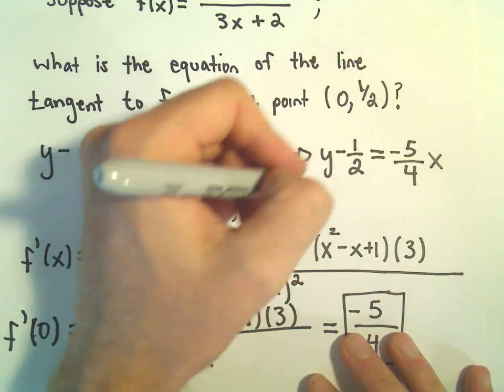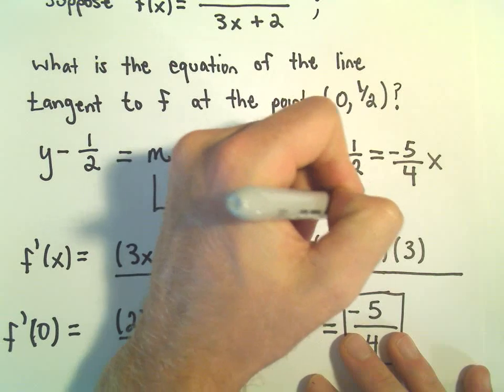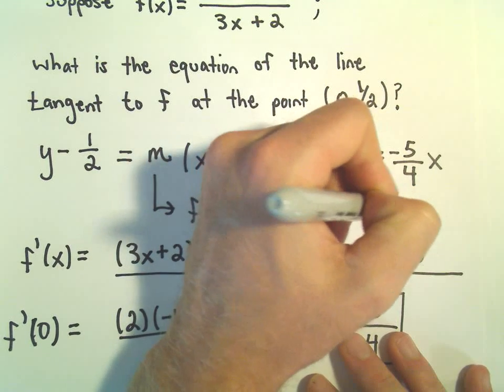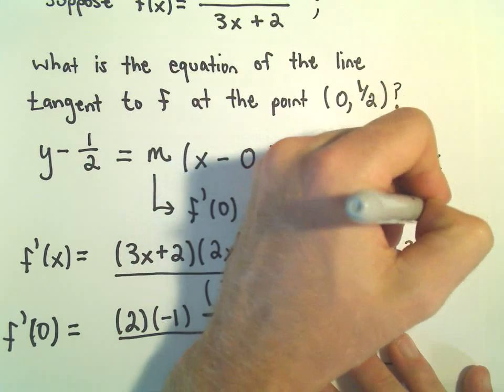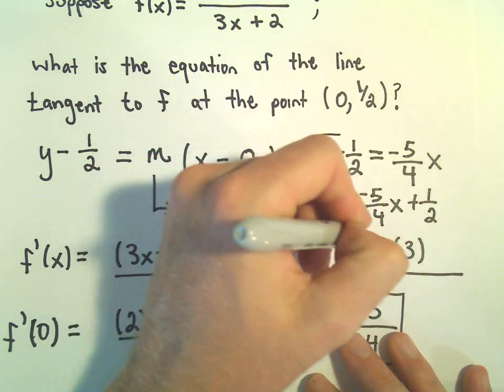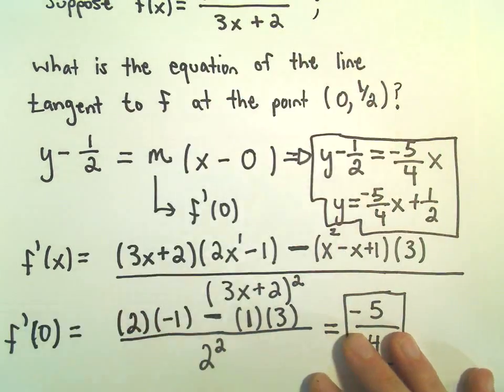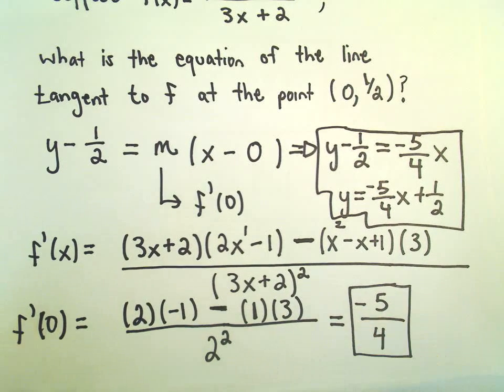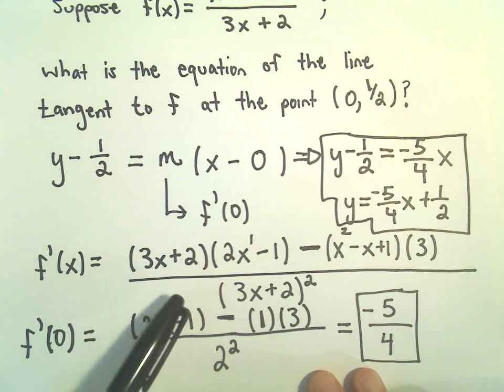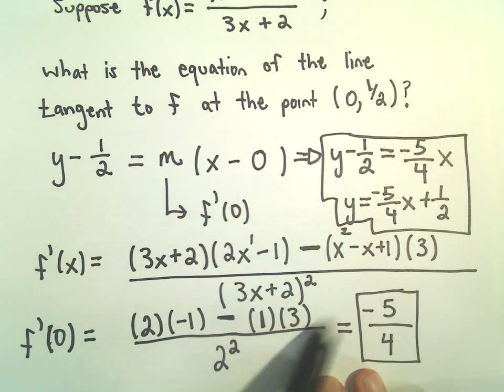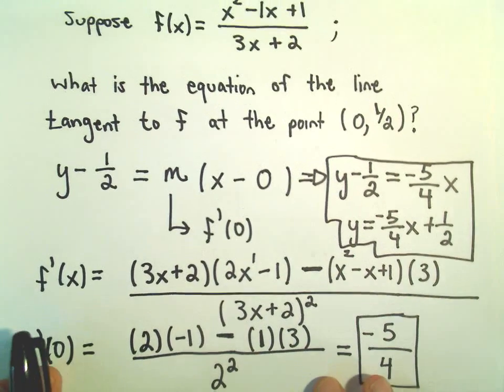And that's now the equation of our tangent line. Of course, you can also add the 1/2 over. You can make it y = -5/4x + 1/2. And again, now we've got the equation of our line either way. So again, finding slopes of lines, what do you got to do? You got to take the derivative and basically just plug the point into the formula.